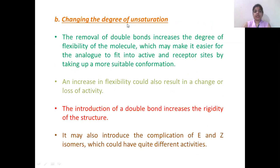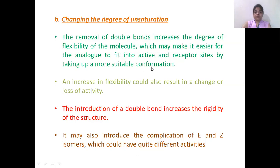The second approach is changing the degree of unsaturation. If there is a single bond in a chemical structure, there is flexibility and the compound is not rigid. As we increase the unsaturation — by incorporating double bonds or triple bonds — the flexibility of the compound decreases and the rigidity gets enhanced. The removal of double bonds can produce analogs that fit in the receptor sites by taking up more suitable conformations. The introduction of a double bond increases rigidity and also introduces E and Z isomers, which can affect the biological activity of the compounds.